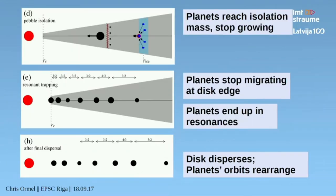This process continues until, at some point, the planet becomes large enough that it exerts a feedback on the disk, and thereby it stops the pebbles in front of the planet. The corresponding mass is something around an Earth mass. So this planet continues migrating — no longer growing — but it still continues migrating. In the meantime, a second planetary embryo has already formed at the ice line. This process repeats until we have seven planets in a gas disk phase, and they get trapped in resonance. Then we argue when the gas goes away, the planetary system rearranges itself until we see the configuration that we see now.